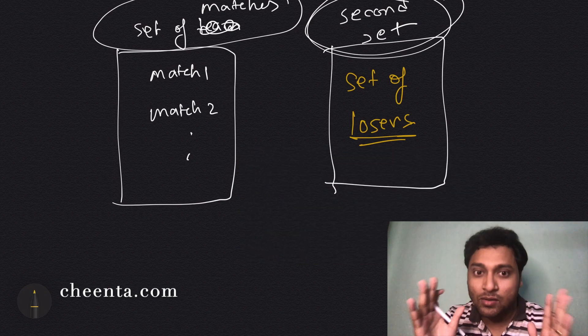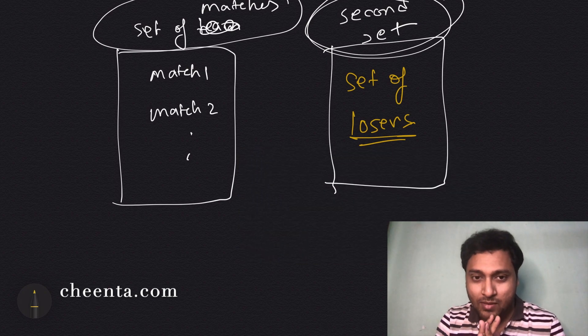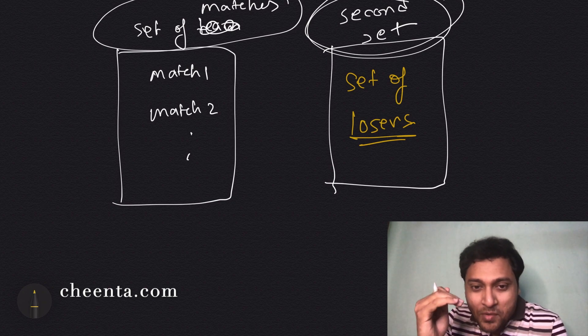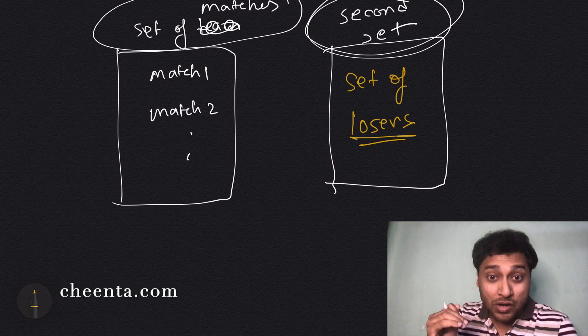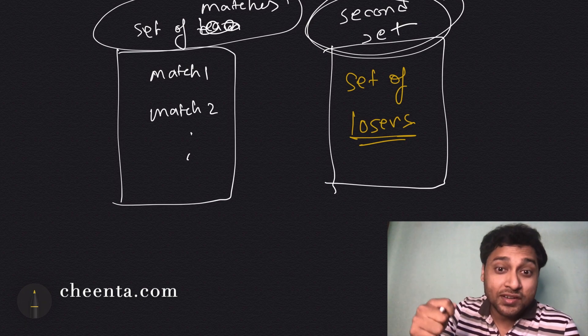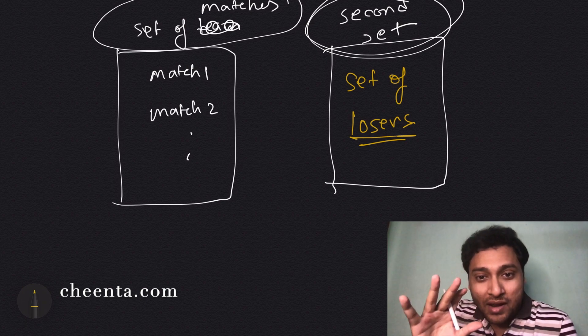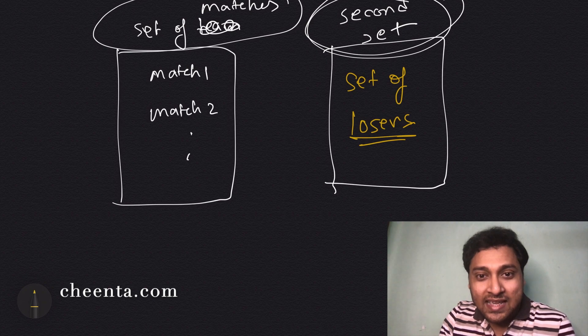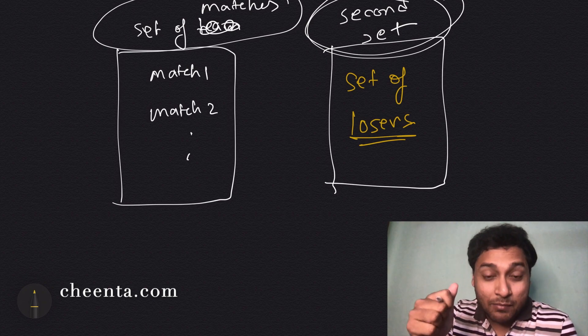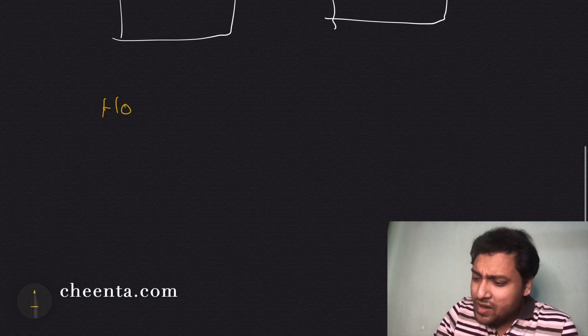That's the one-to-one onto mapping. If you count the number of losers in the knockout tournament—it's a knockout tournament so no loser is playing a second game—that's the number of matches. So how many losers are there?